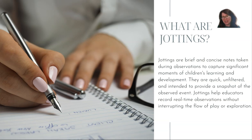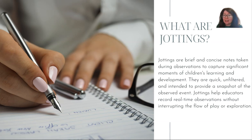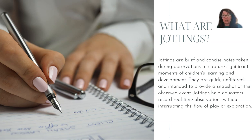What are jottings? Jottings are brief and concise notes taken during observations to capture significant moments of a child's play, learning, and development. They are quick — that's their advantage. They are unfiltered and intended to provide a snapshot of the observed event. Whether you are writing about child interactions, play, routines, interests, vocabulary, or social context like friendships, you write this very briefly in real time without interrupting the flow of play, routine, or exploration.